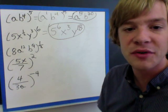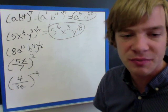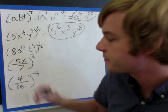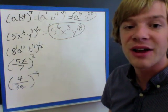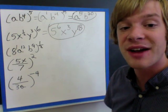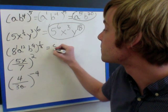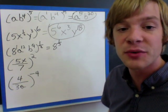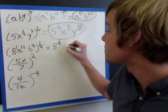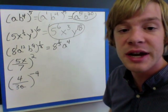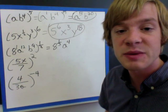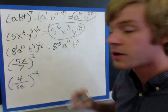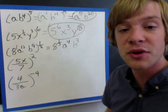With the 3rd example, now the power on the outside is a fraction, so I need to multiply that fraction times all of the powers on the inside. I have 8 to the 1st power — 1 times 1 third is just 1 third, so I get 8 to the 1 third power. Then 9 times 1 third is the same as 9 divided by 3, giving b to the 3rd power. So 8 to the 1 third, a to the 4th, and b to the 3rd is my final answer.